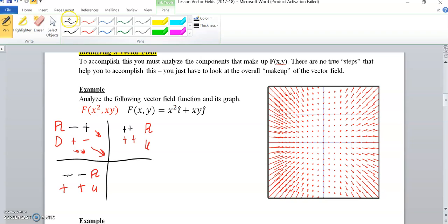And our last quadrant, the x is positive, and the y is negative. So we get positive term squared. That's still positive. And positive, negative gives us a negative. So we would point right and down.